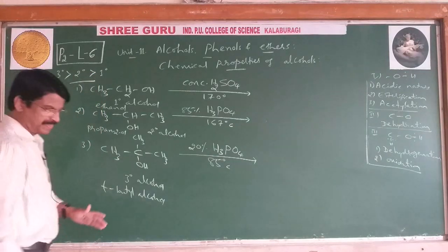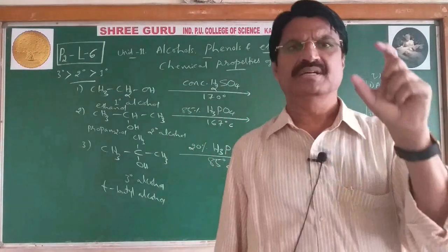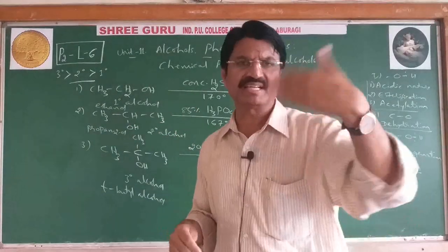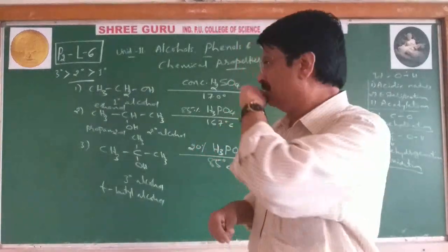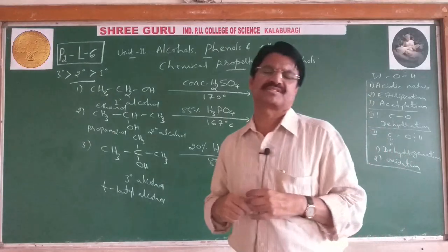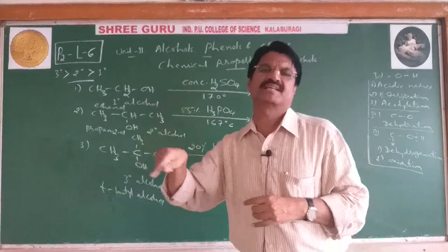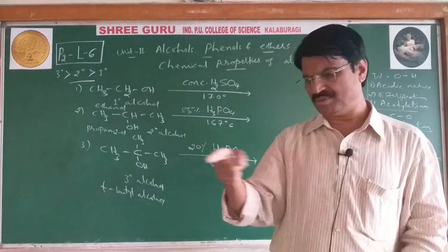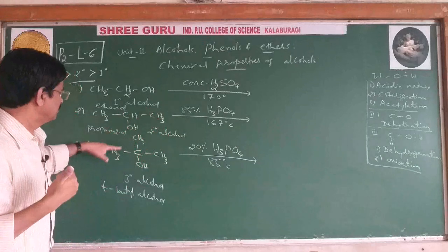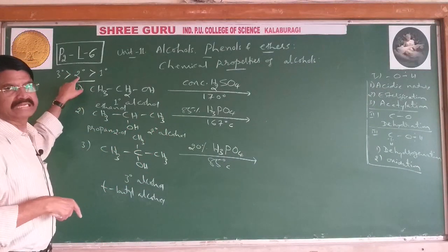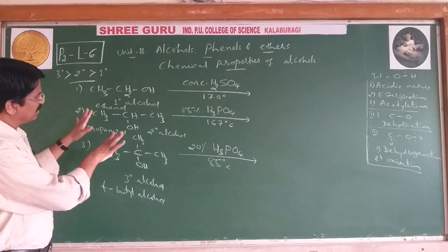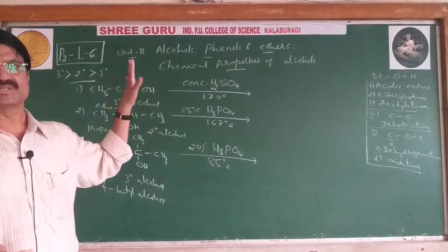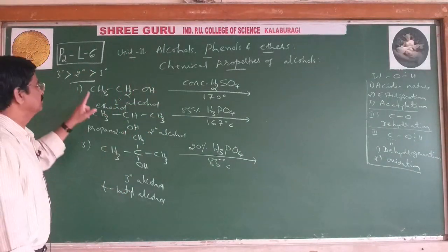The order of ease of dehydration of alcohols is: tertiary > secondary > primary. Remember, in acidic nature of alcohols the order is reversed: primary > secondary > tertiary. But for dehydration, tertiary alcohol occurs fastest. With the mechanism I'll tell you why it undergoes easy dehydration after explaining the mechanism of dehydration of ethanol to ethene.